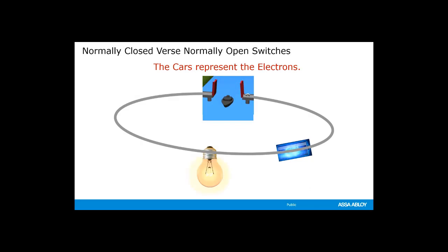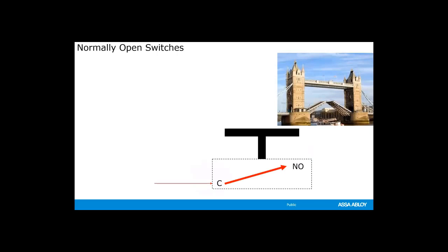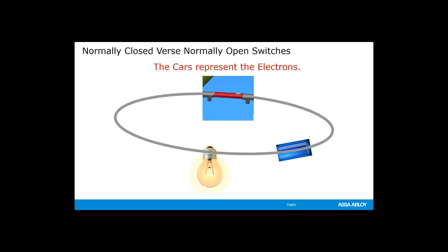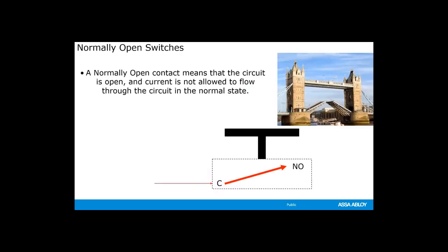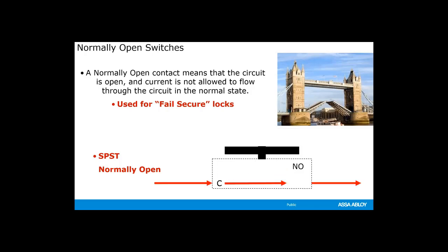When you're working with switches, you'll be working with normally open or normally closed switches. Think of the switches as drawbridges and the electricity as the cars. When the drawbridge is open, no cars are allowed to pass — this is the exact same concept for switches. When the circuit is open, the circuit is broken, cutting the power to the load and the load will no longer function. A normally open switch means that the circuit is normally open and the current is not allowed to flow through the circuit in its normal state. Normally open switches are used with fail-secure locks. With fail-secure locks, electricity is applied to the lock to unlock it. With a normally open switch and a fail-secure lock, the door would remain secure until the switch contact is closed, completing the circuit and unlocking the door.